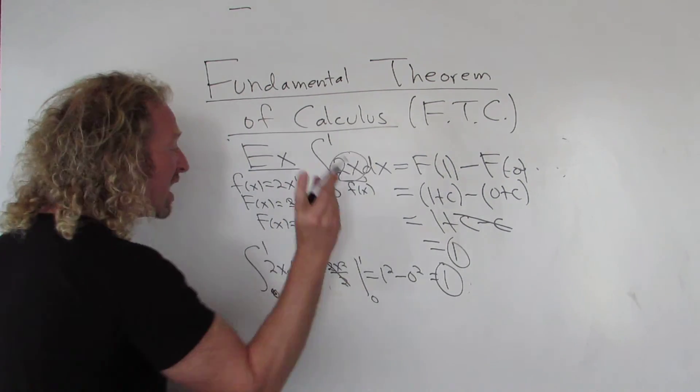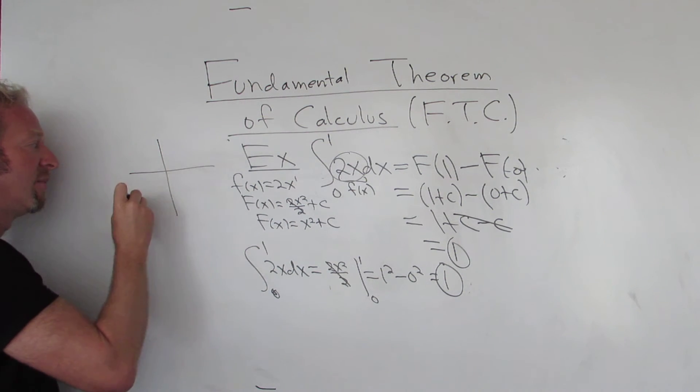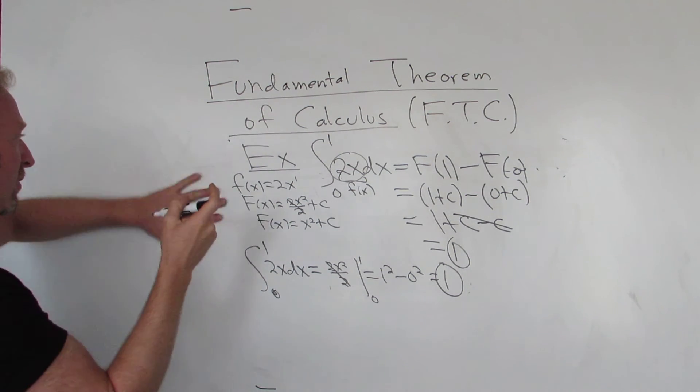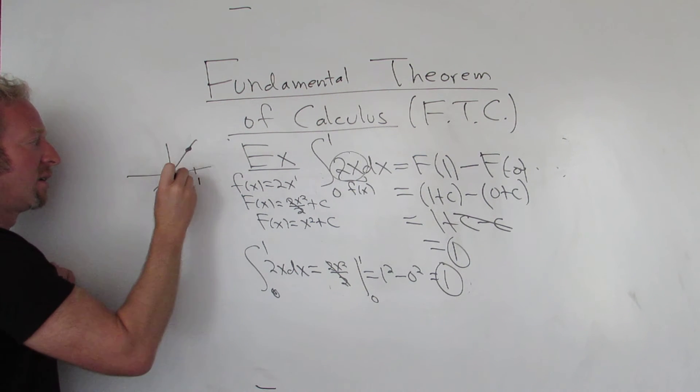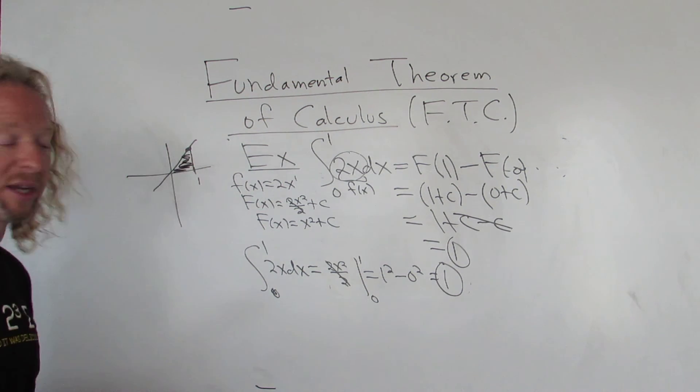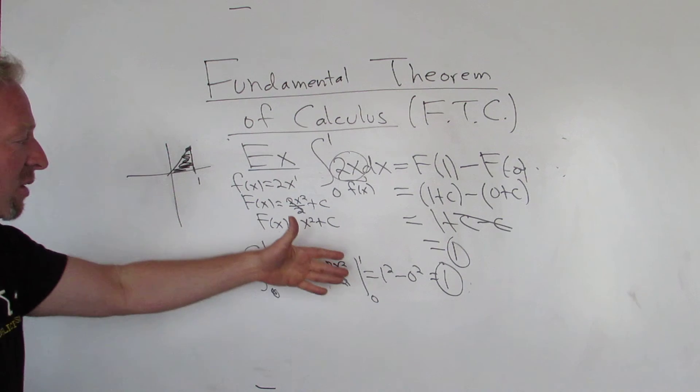Well, in this case, since this function is non-negative, it's up here. So this is the line 2x, and we're going from 0 to 1. So we're finding the area of this triangle, right? So we found the area of the triangle using calculus.